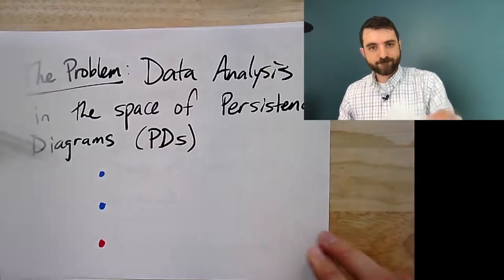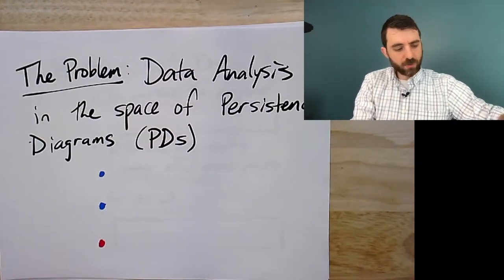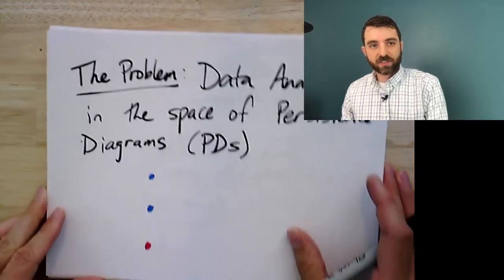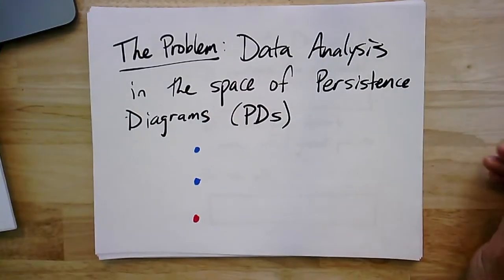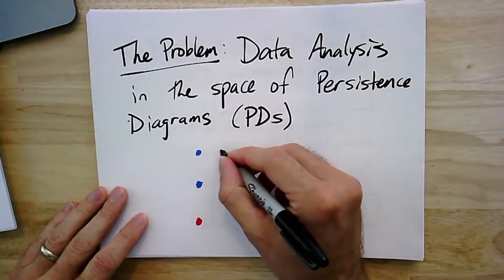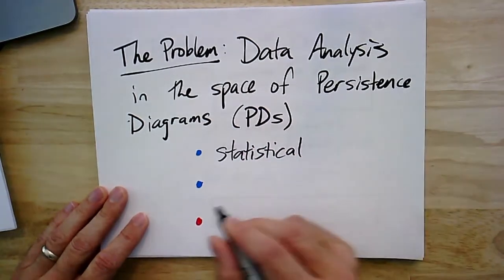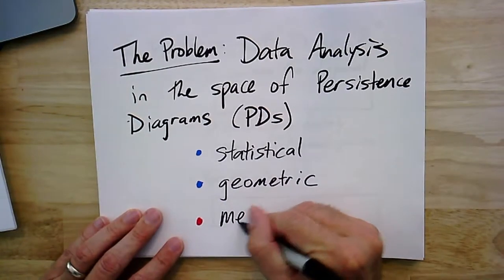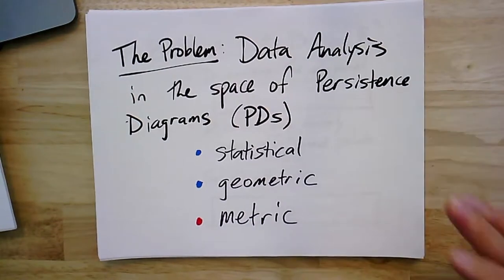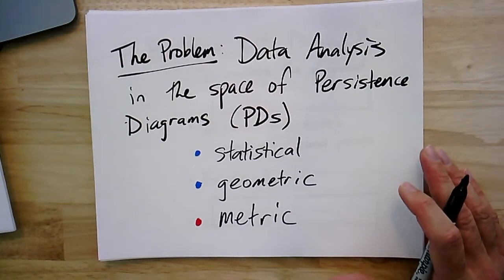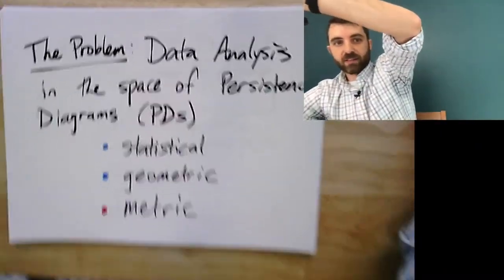Here's the idea, here's the problem. I want to do data analysis in the space of persistence diagrams. There are a bunch of different perspectives you could take on this problem — statistical problems, geometric problems — but for today what I really want to focus on is the metric structure. If you are not familiar with persistence diagrams or the standard metric, I'll define these in a second. This is the high-level problem we're going after: how to do data analysis in the space of persistence diagrams.